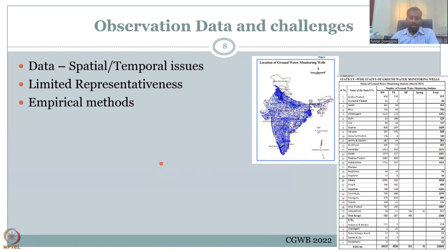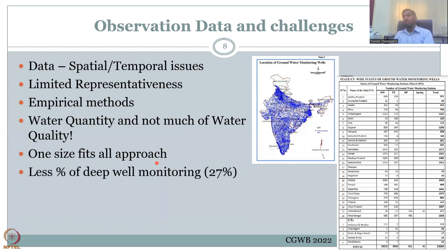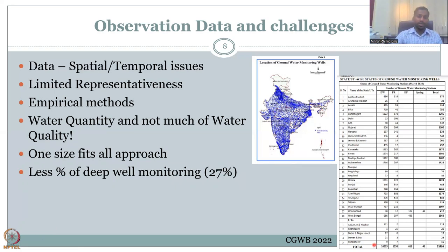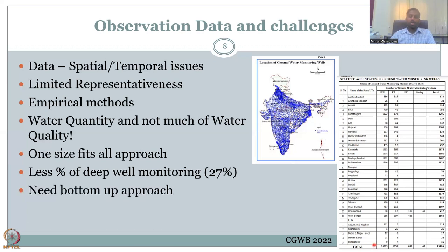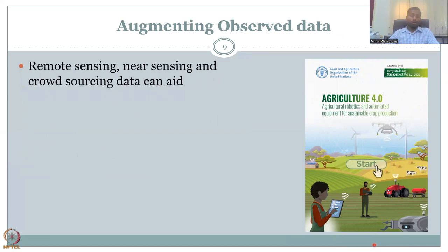There is limited representativeness — monitoring wells can be 1-2 km from the actual farmer's well, not capturing correct values. Recharge estimates rely on empirical rather than physical-based methods, and quantity is measured rather than quality. This leads to a one-size-fits-all management approach. Only 27% of monitored wells are in deep aquifers, whereas the percentage of people using deep aquifers for agriculture and domestic use is much larger. Remote sensing, near sensing, and crowdsourcing — including drone imagery — can aid in filling this gap.